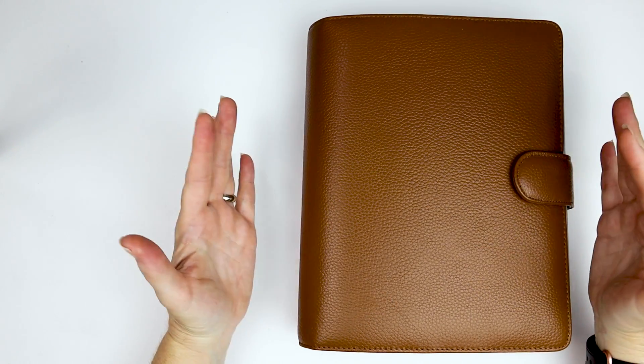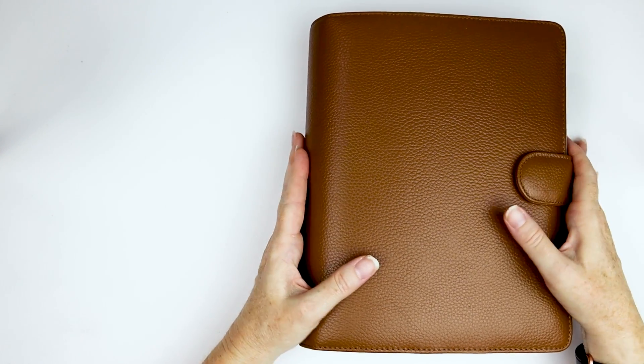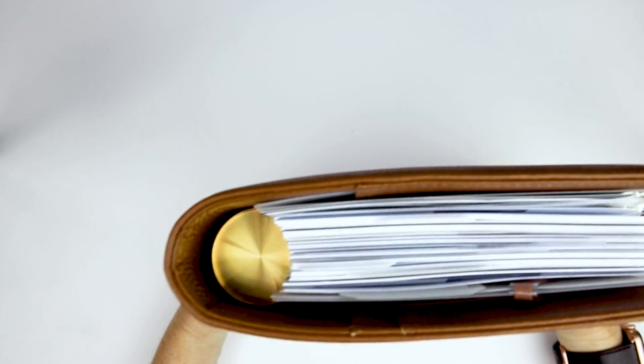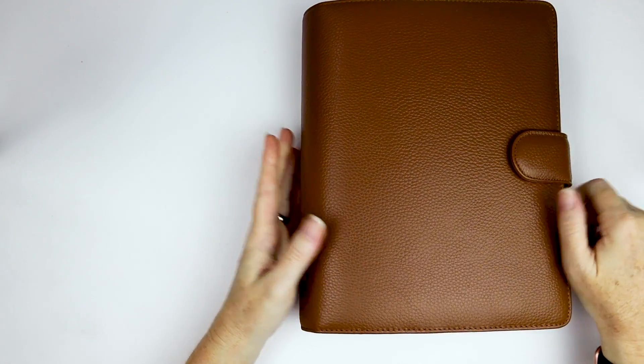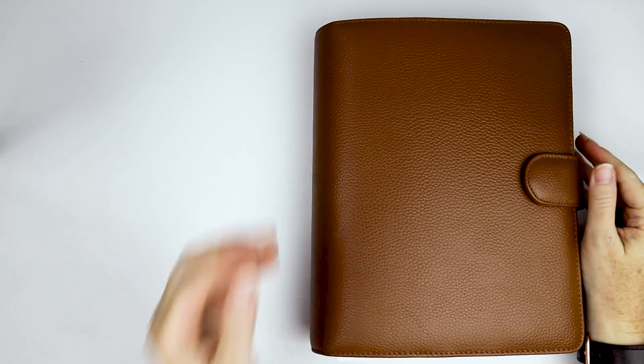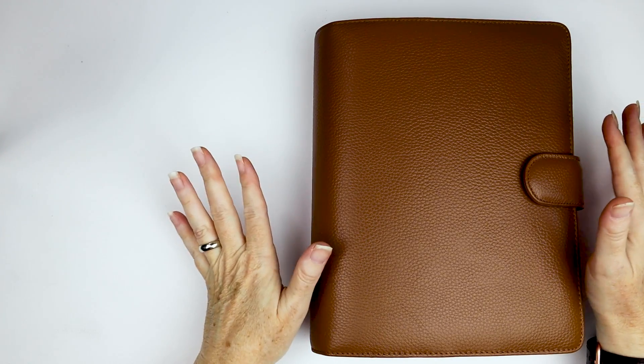So the first one I wanted to start off with is kind of like my everyday catch-all. Everything's in here. This is my brain sort of planner. All of these are pretty much disc bound. So I'm just finding it's a good spot for me right now. They're all, I believe, for the most part, half letter.